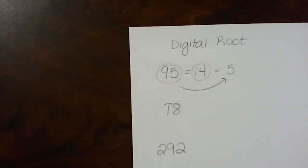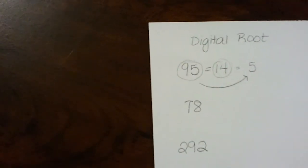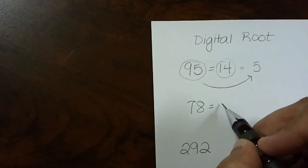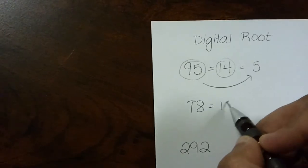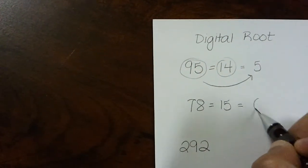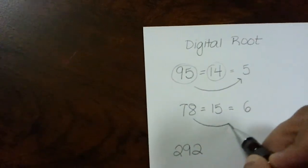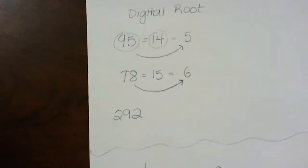Let's look at another one, 78. The digital root, you would add those up and you would get 15. You add it again and you get 6. So the digital root of 78 is 6.